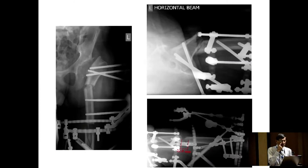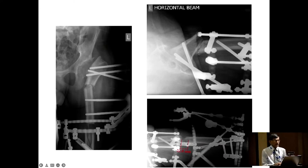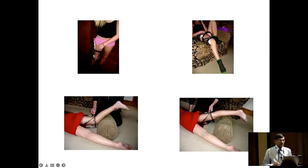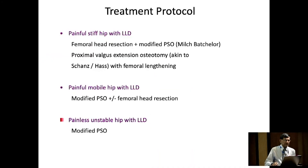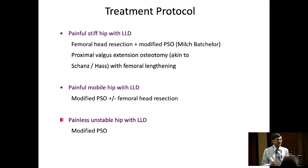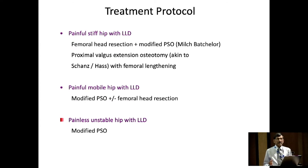This is how it looks, and the most important picture is the extension visible in the lateral view. They need a lot of rehab. I make them walk straight away, full weight bearing. Treatment protocol: for painful stiff hip with LLD, the classic Milch-Bachelor procedure — resecting the femoral head with a modified PSO, a proximal valgus extension osteotomy akin to the original Schanz or Haas, with femoral lengthening. When painful and mobile, the same plus or minus femoral head resection. The painless unstable hip with LLD is the modified pelvic support osteotomy.